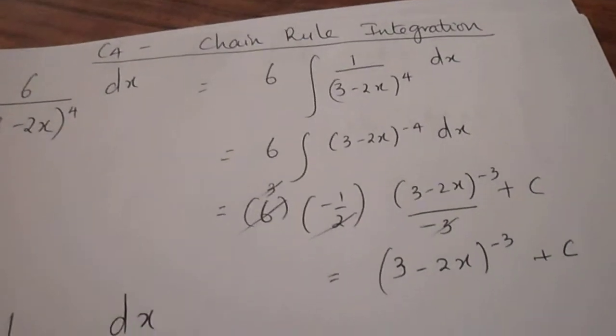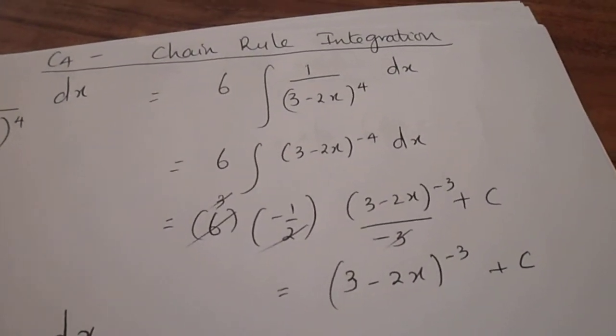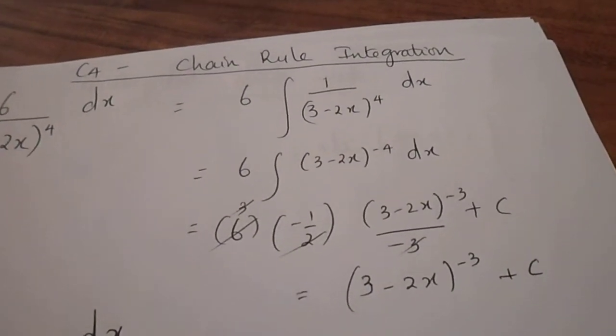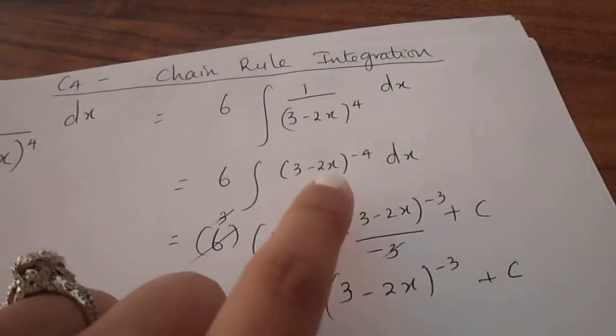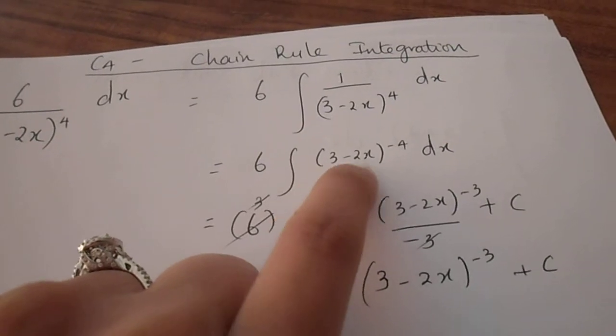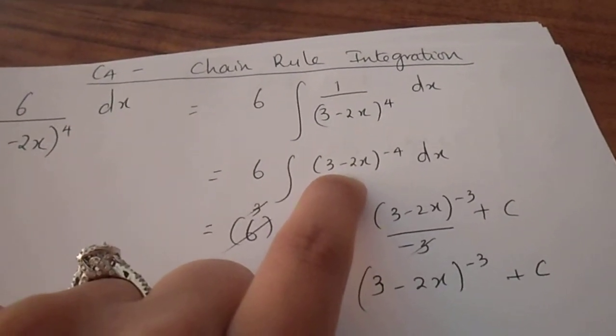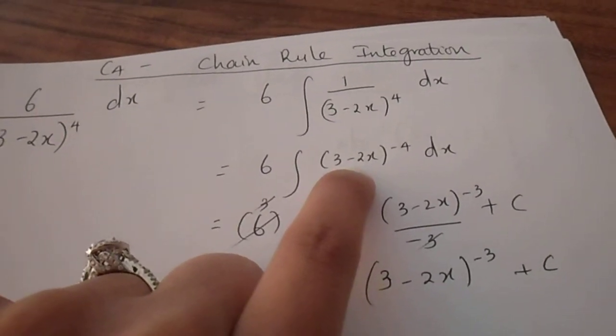So you are left with 6 integral of 3 minus 2x to the power of minus 4 dx. This is ready to get integrated using the chain rule method. The first step is to differentiate whatever is inside the bracket. When you differentiate 3 minus 2x, you will obtain minus 2.